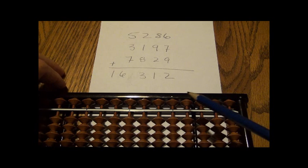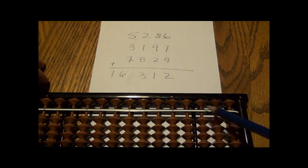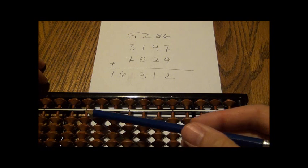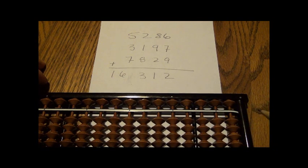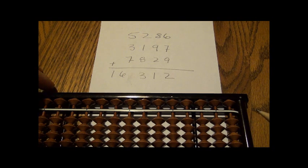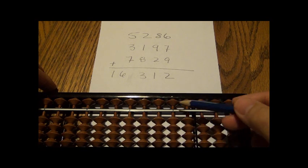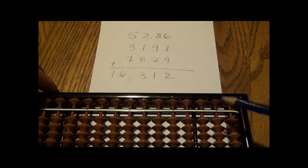Notice also that on this middle bar there's these dots here. It's just a help to keep track of which digit you're working on. You can use any one of these dots to mark your ones digit. I'm going to choose this one here as my ones digit.